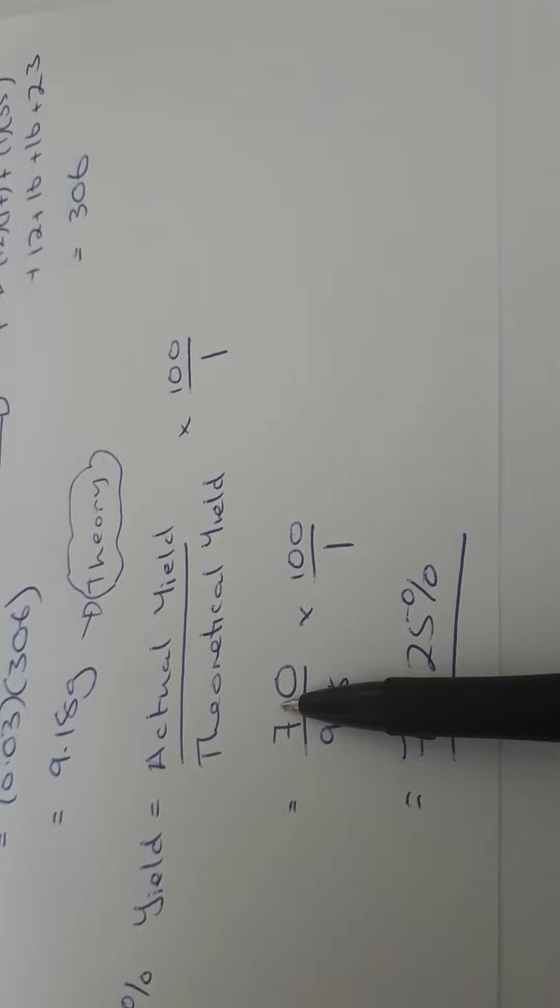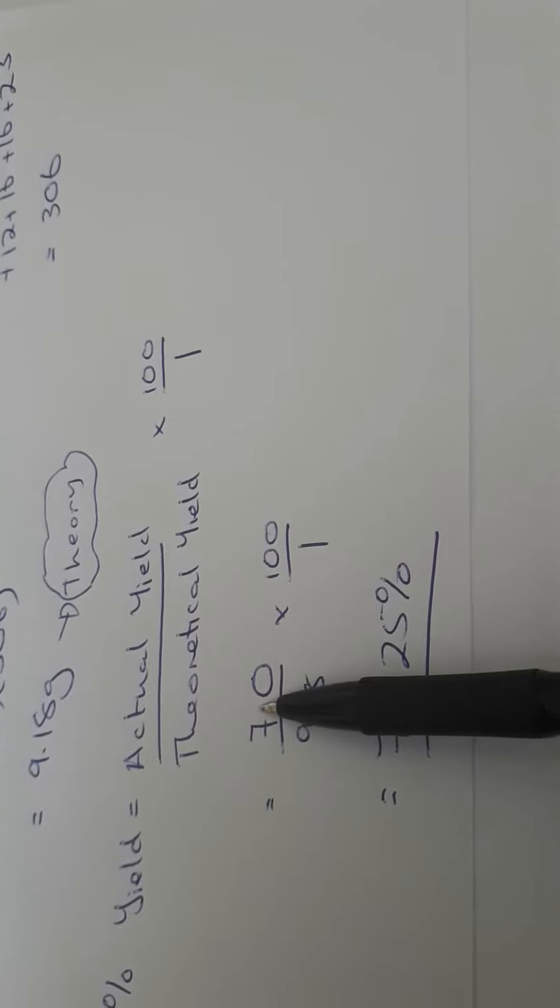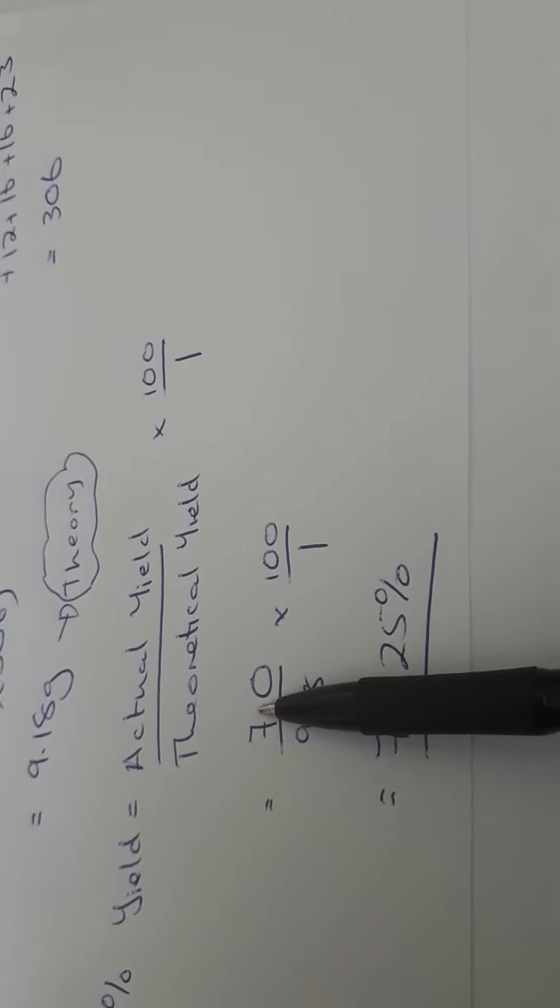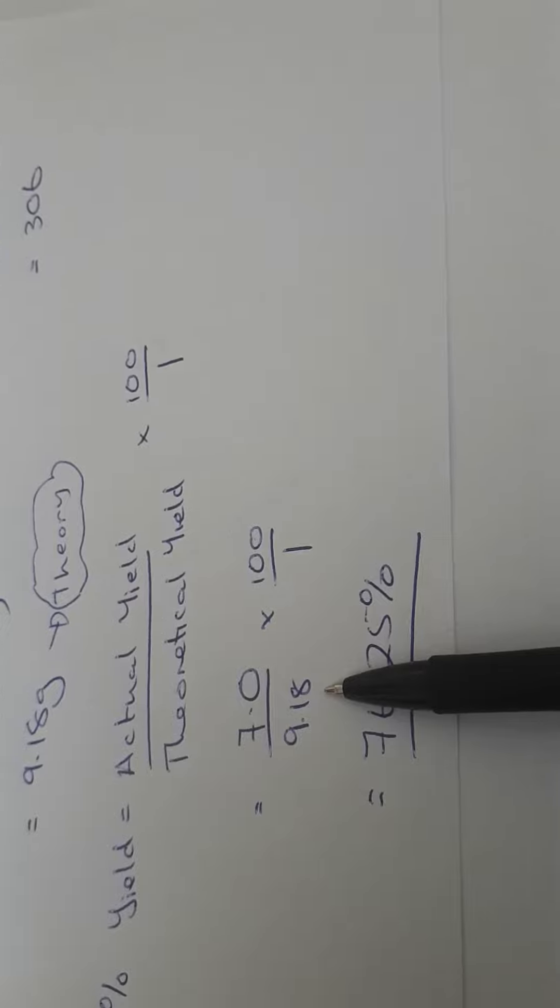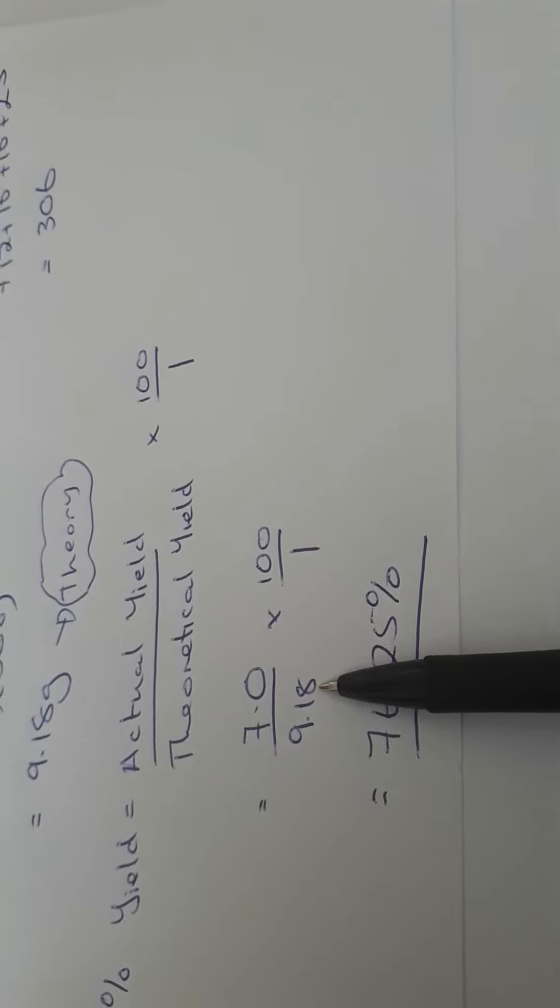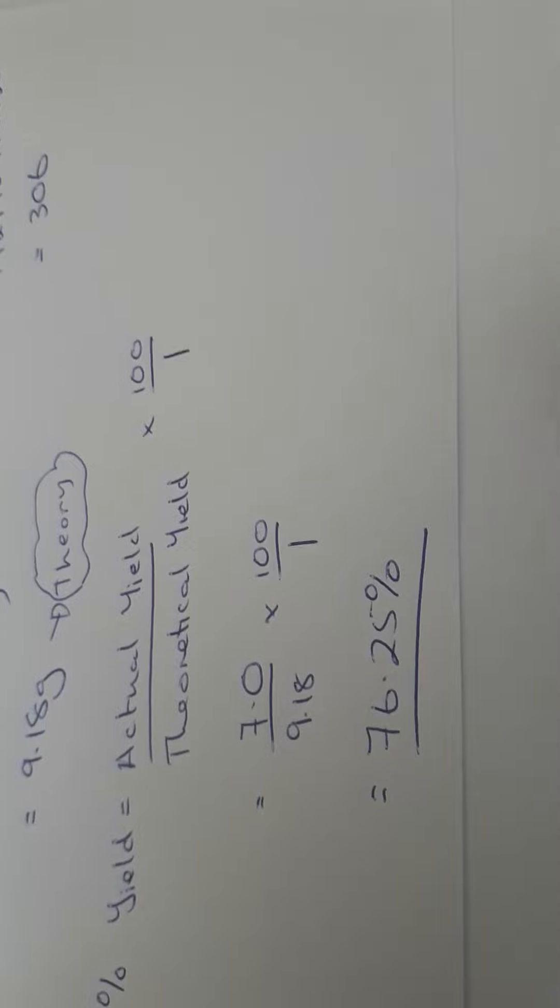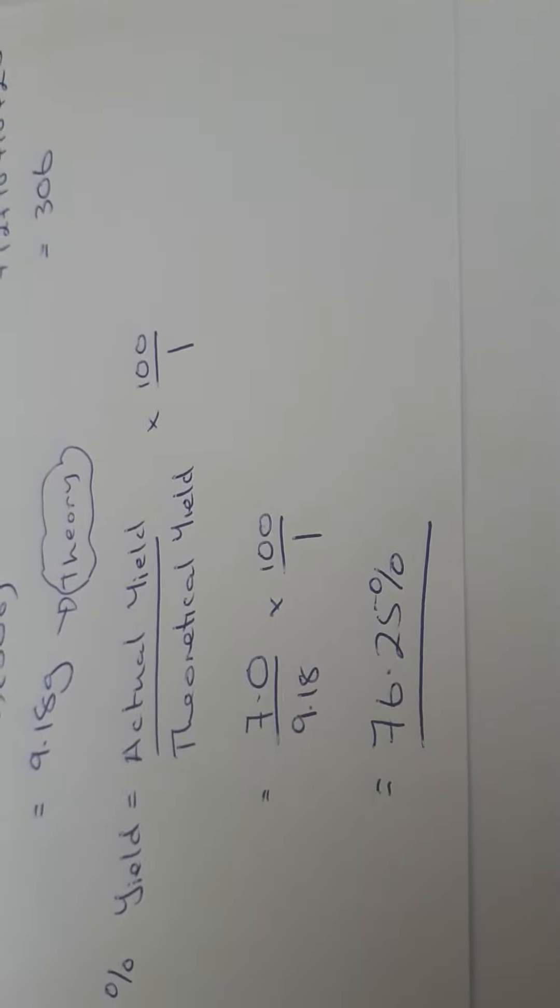So to get my percentage yield, it's the actual yield. I'm told I end up with 7.0 grams of pure dry soap. My theoretical yield is 9.18, multiplied by 100 over 1, gives you 76.25 percent yield.